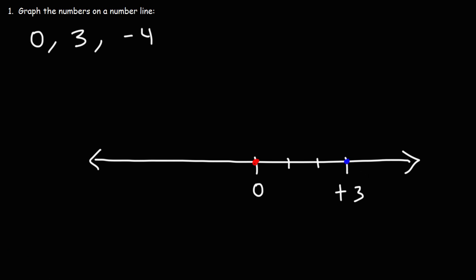Now, negative 4 — that's going to be on the left side, so we need to count 4 units to the left of 0. And so negative 4 will be here. So that's how we can plot integers on a number line.